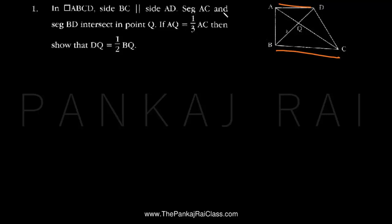Seg AC and seg BD intersect in point Q. AQ is equal to 1/3 AC. We have to prove that DQ is 1/2 BQ.